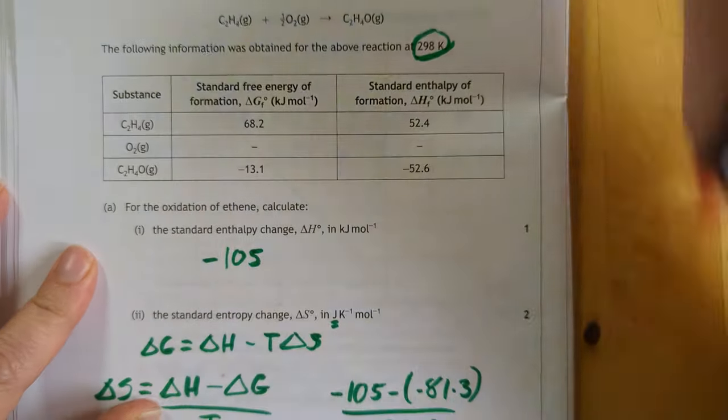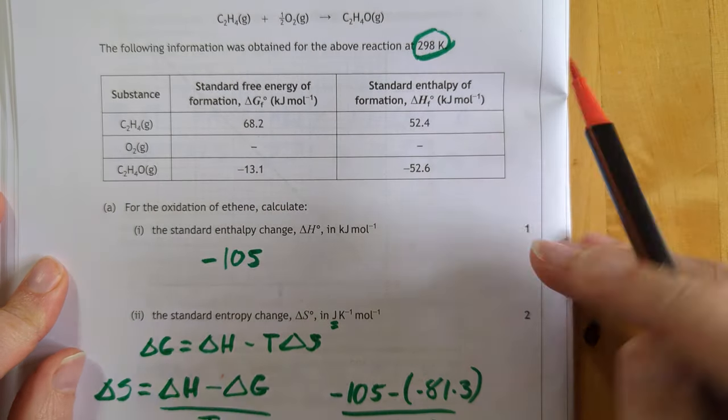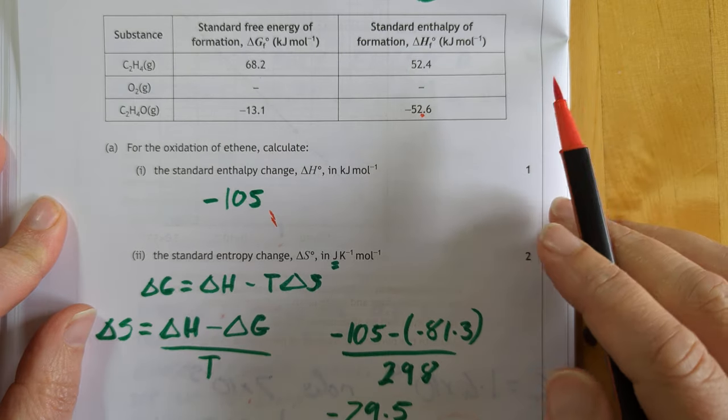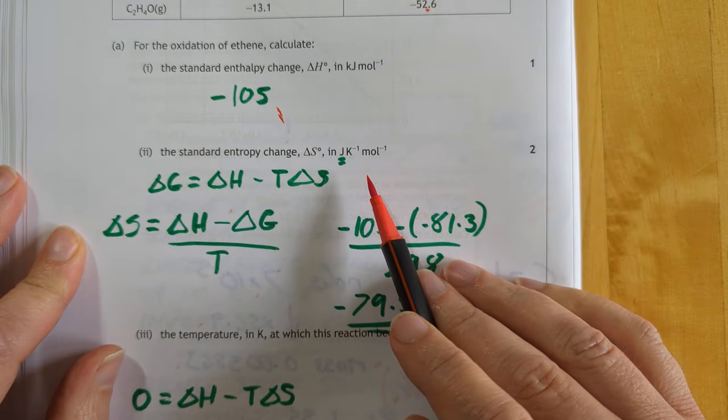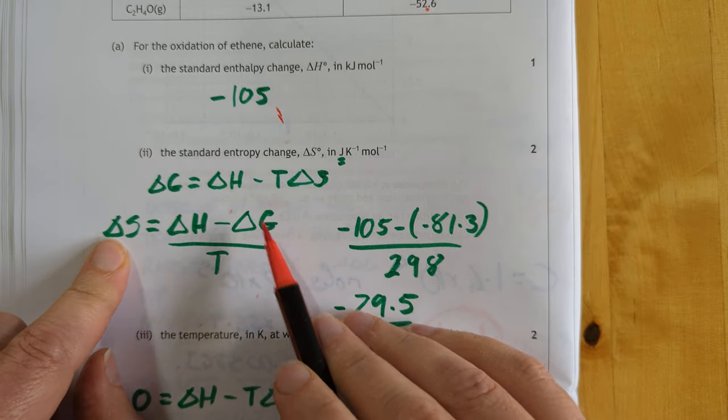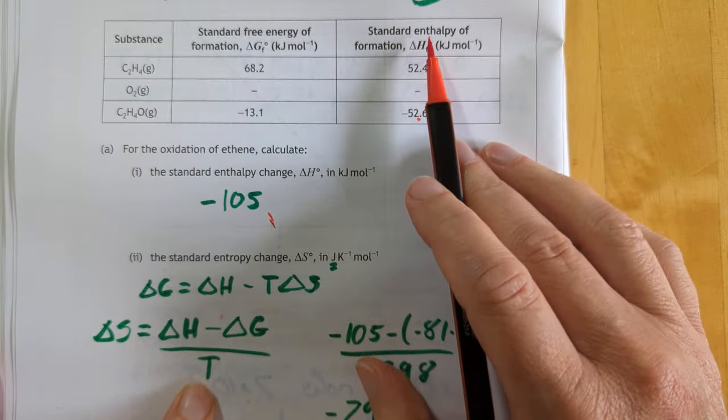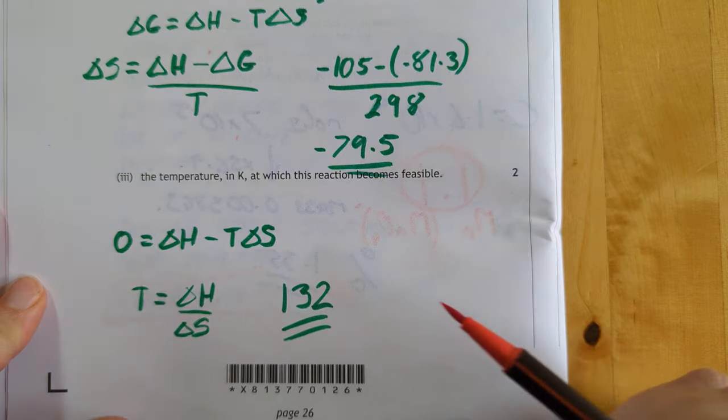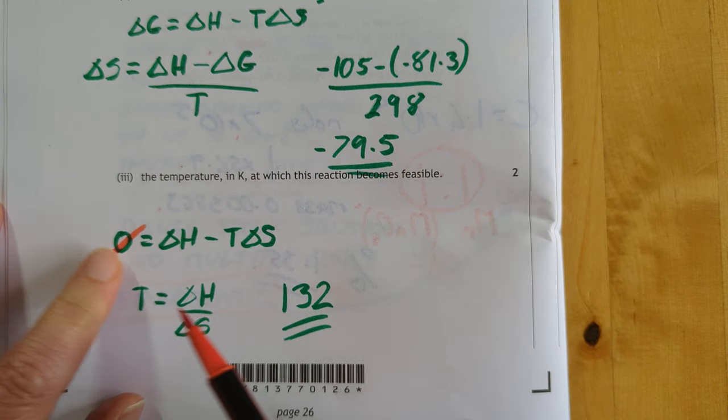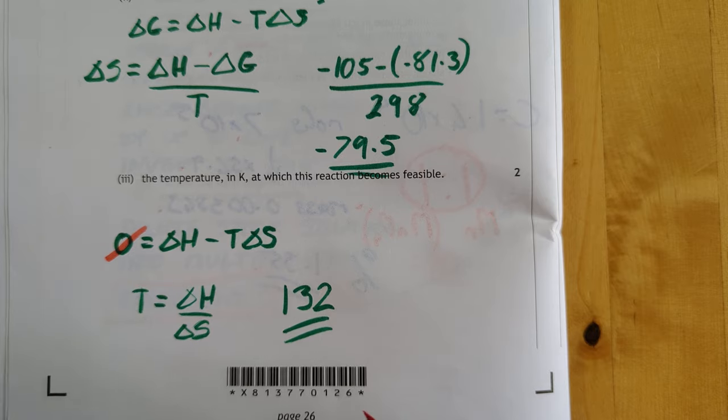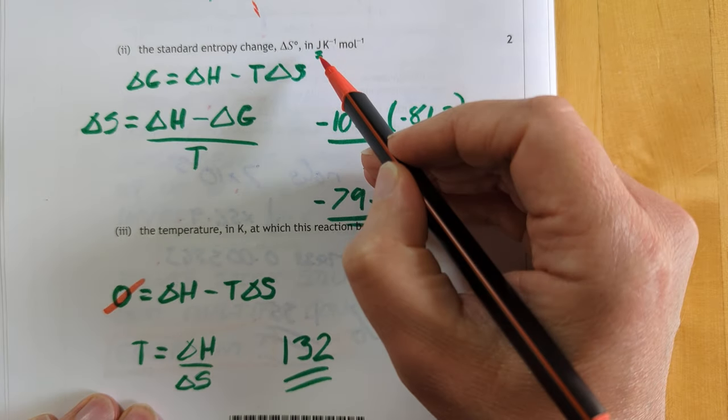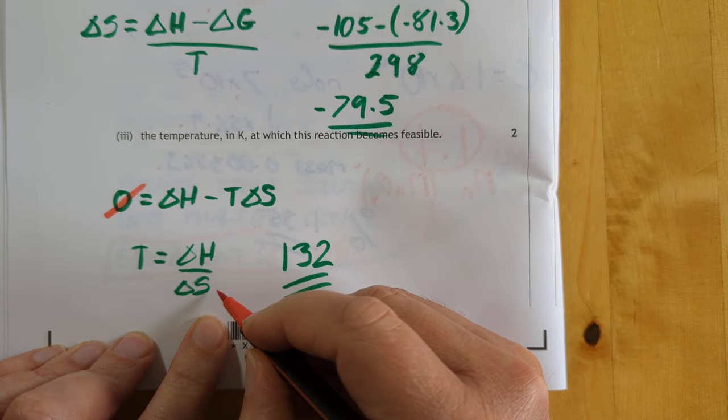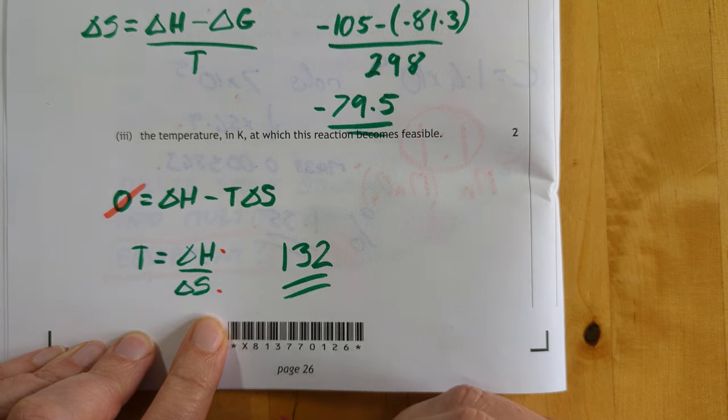I'm changing over to green now just for a different colour. The following information was for 298. I get this. That's simply that take away that. Standard entropy change I calculated by solving for delta S from this. We know the temperature because it's quoted as 298 up here. I got that. These could well be wrong.